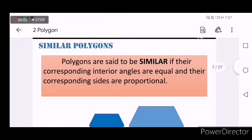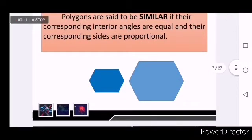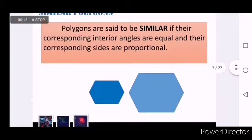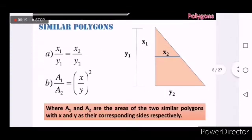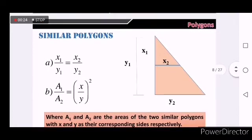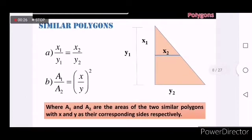Polygons are said to be similar if their corresponding interior angles are equal and their corresponding sides are proportional. It's like resizing, but the ratios of the sides and angles don't change. Because of that, we can actually have different formulas or equalities for these similar polygons.